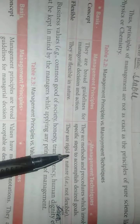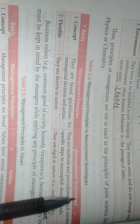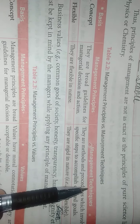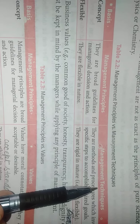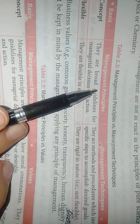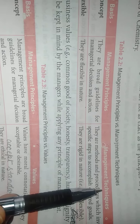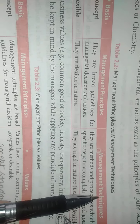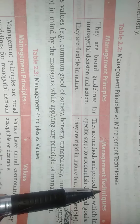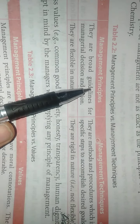Coming back to the point: management techniques are the method and procedure — I gave an example of motion study. We set a time for laborers working on machines, giving them 5 minutes for a tea break. The technique is that the whole machine line stops for 5 minutes, and after 5 minutes the work starts again.